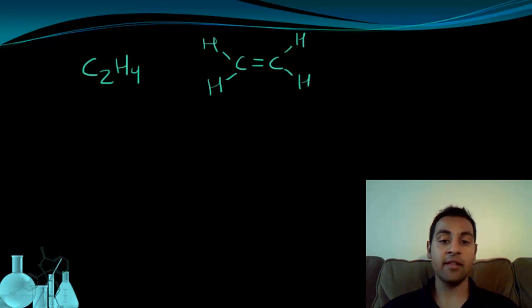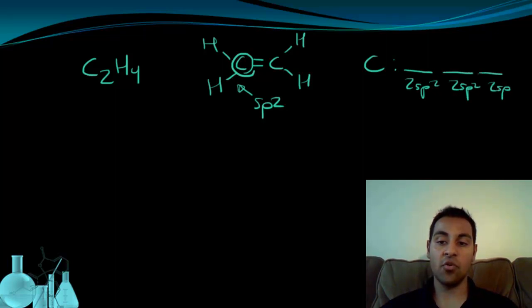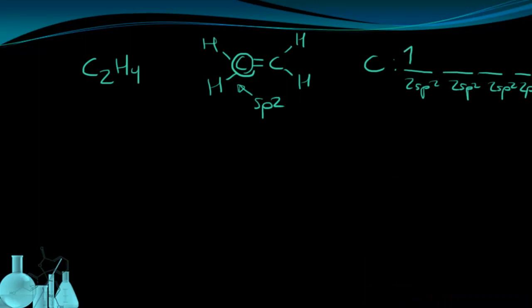We can tell very quickly that this exhibits sp2 hybridization for these bonds in this molecule. So when we look at the electron configuration for one of these carbons, we're going to see that it has a 2sp2 orbital, another 2sp2 orbital, another 2sp2 orbital, and then finally a 2p orbital that is not involved in the hybridization. There's going to be one electron in each of these orbitals, hybridized or not.